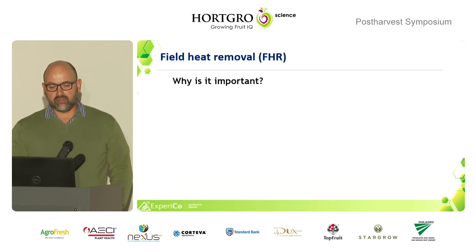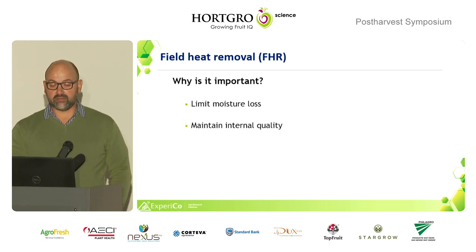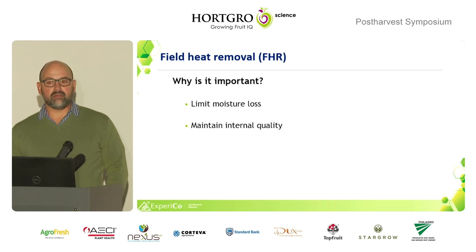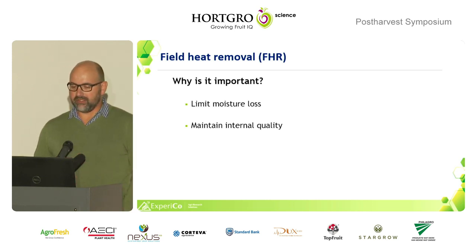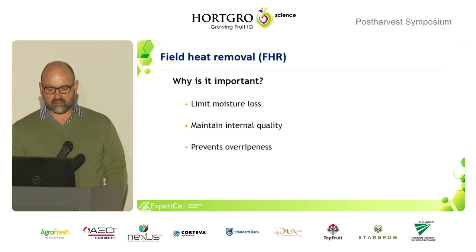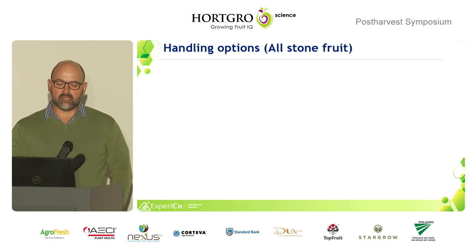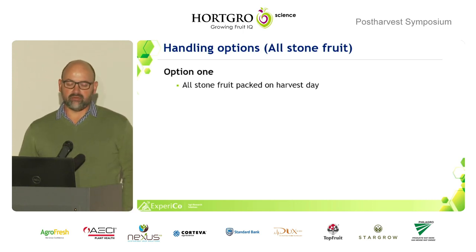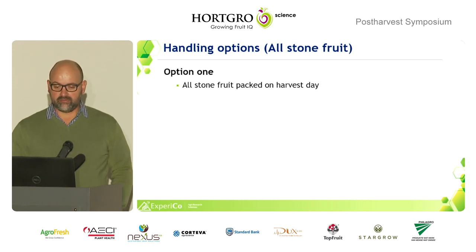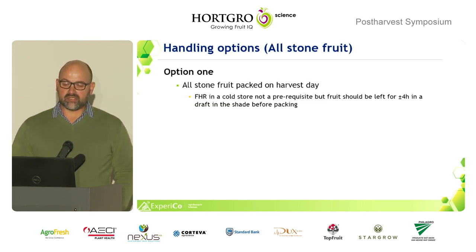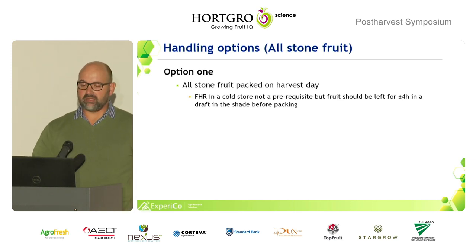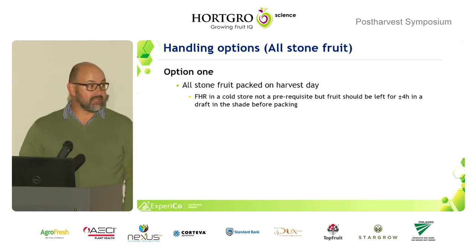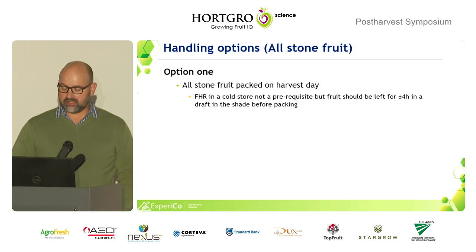Field heat removal is important to limit moisture loss, maintain fruit quality — you can spend months growing good fruit and mess it up in an hour or two — and to prevent over-ripeness. Option one is to pack stone fruit on the same day you harvest; that's ideal. A cold room for field heat removal is not necessary, but if you have one you can use it, or just leave it in the shade for a few hours to get the field heat out.